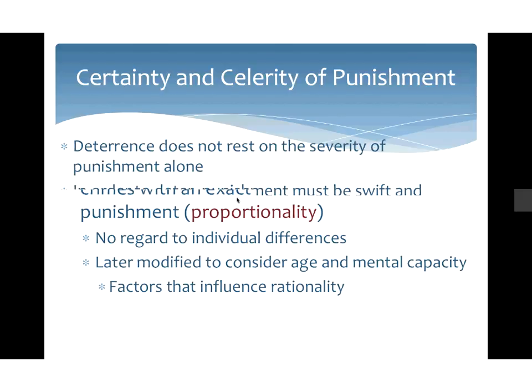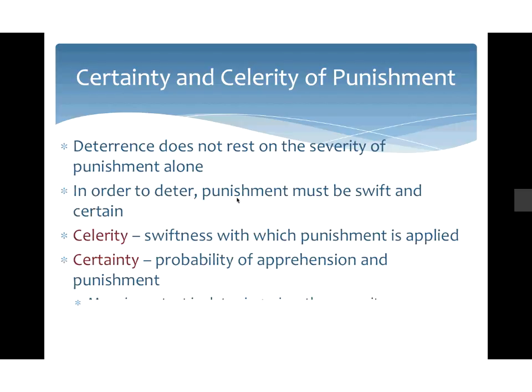We also want to think about the certainty and celerity of punishment. Certainty is the probability that you'll be apprehended and the probability that you'll be punished — and this is even more important than how severe the offense is. Even if there's a small fine for a behavior, if you knew you were going to get caught pretty much every time, the amount of punishment almost doesn't matter. Celerity — also referred to as swiftness — is also important. In order to deter, punishment needs to happen close to the offense. If parents punished you much later for a rule you broke, you may have already learned your lesson; the punishment becomes less meaningful.